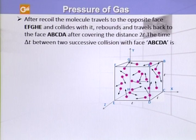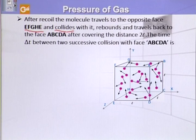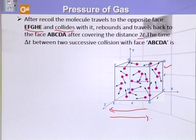After recoiling, this molecule will definitely travel towards the opposite face, which is EFGH. It will travel towards it, collide with it, and rebound from there as well. After rebounding, it will come back towards face ABCD, and in this way it will cover a total distance of 2L. So the total distance covered between two successive collisions is 2L, and the time between these two successive collisions is delta T.